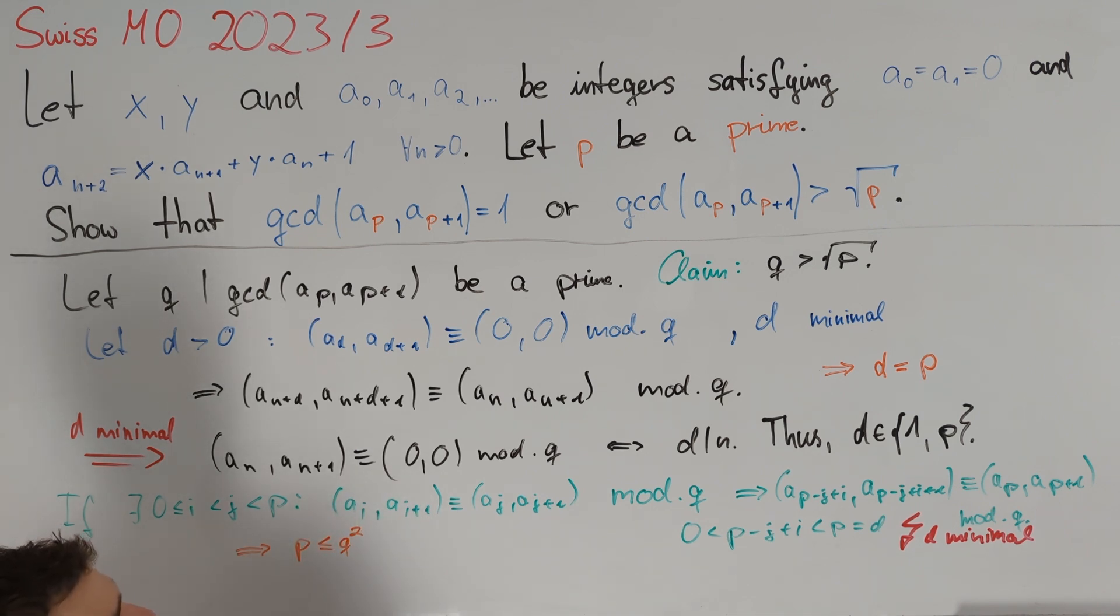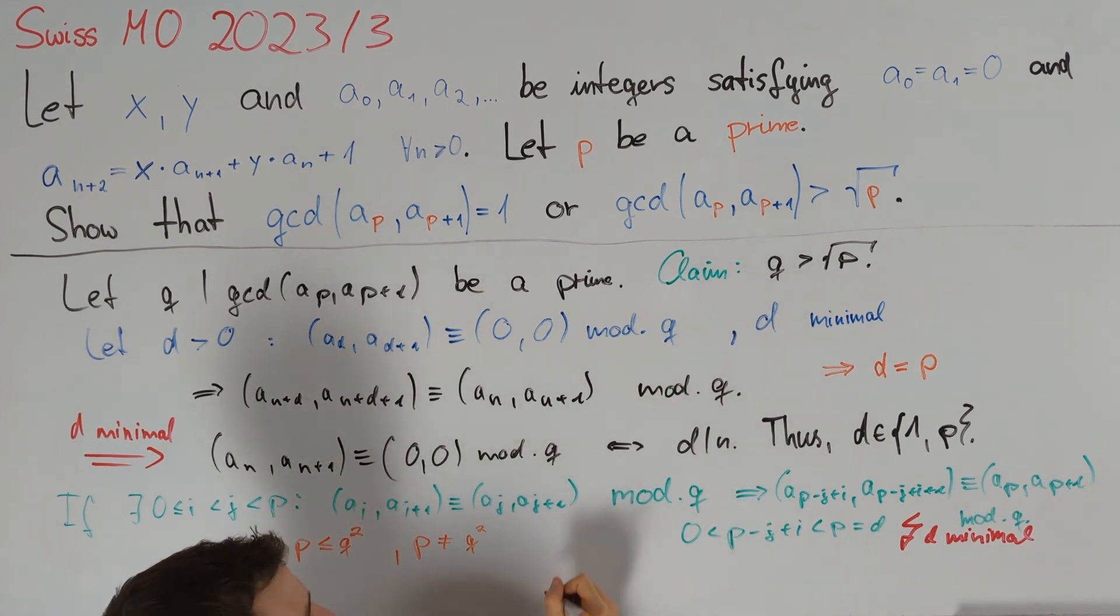To finish the proof of our claim and therefore the proof of the problem statement, we only notice that p is clearly not equal to q² since it is a prime number. Therefore, q is indeed larger than the square root of p and therefore we are done.